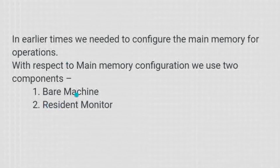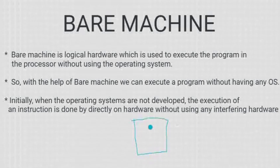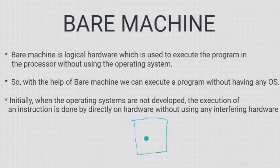Let us start with bare machine. Bare machine को आप इस तरह से समझ सकते हैं — जब आपके पास एक machine थी और उसमें obviously एक memory portion लिया होगा, तो आपके system में यह memory थी। But आपने इस memory को किसी भी तरह से divide नहीं किया — this is the whole chunk of your memory. आपके programs आएंगे, इस memory में reside करेंगे, यहीं पर execute होंगे, यहीं पर results देंगे।